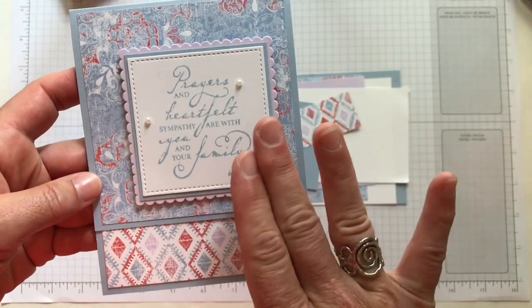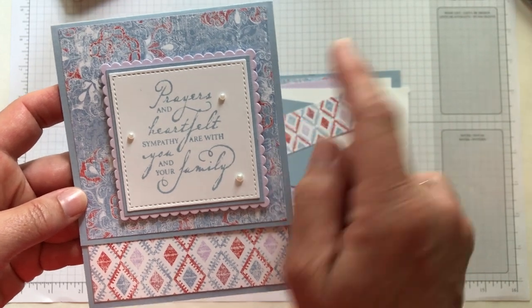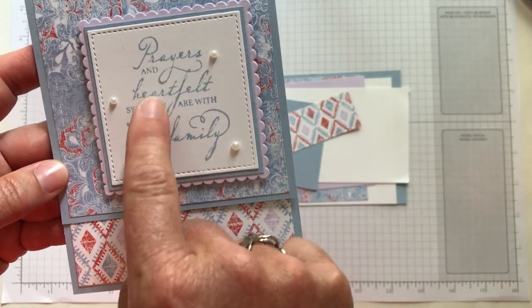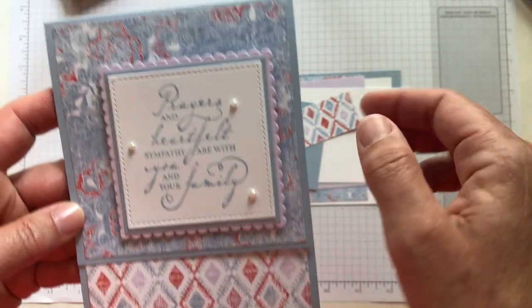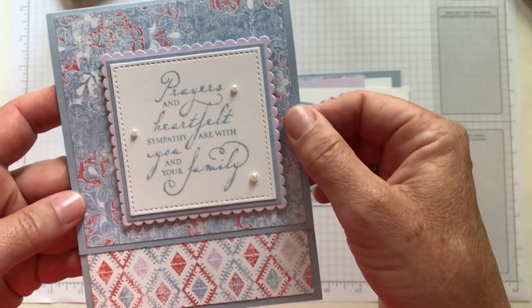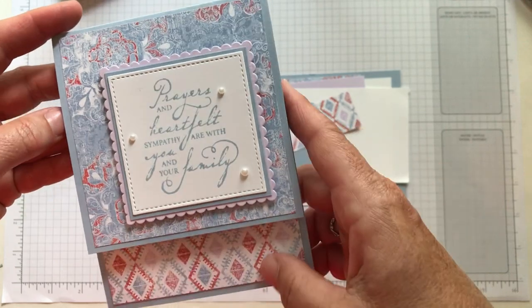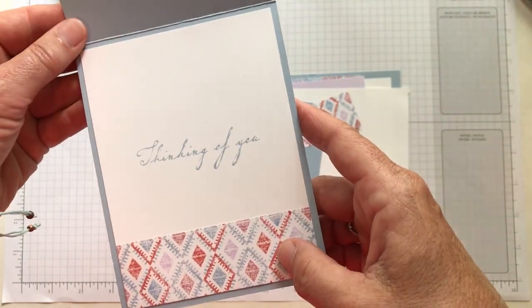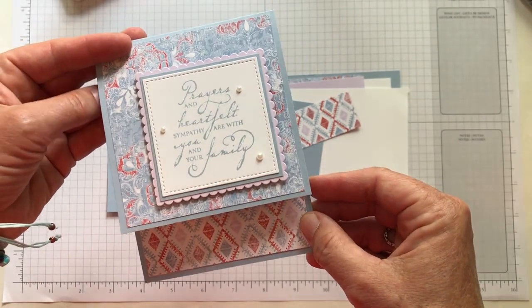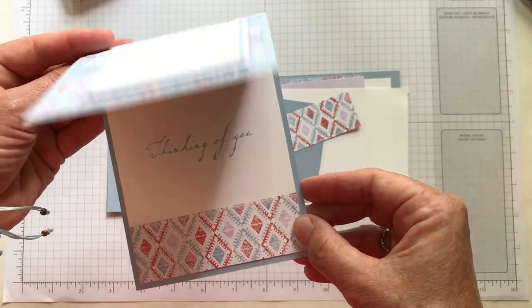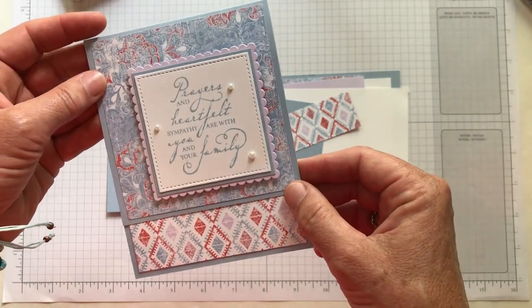We have this beautiful sentiment that says 'prayers and heartfelt sympathy are with you and your family.' I know we can always use, unfortunately, these sympathy type cards. And then on the inside I did a fun little 'thinking of you' with that little strip of designer series paper, so you kind of like a little peekaboo look at the inside of the card before you even open it.